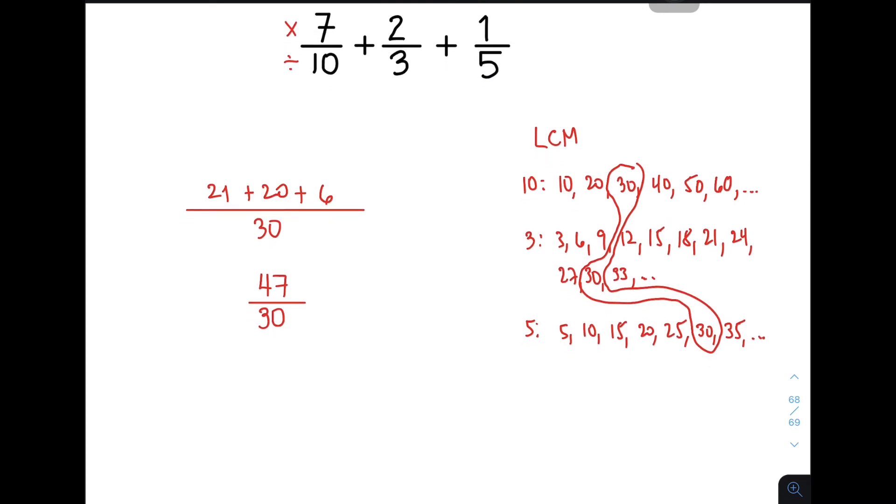Or you can convert this into mixed number. So convert that into mixed number. So you can have 47 divided by 30. So that is 1, this is 30, this is 17. So as you can see, the equivalent mixed number of this improper fraction is simply 1 and 17 over 30. This is the final answer for item number 2.